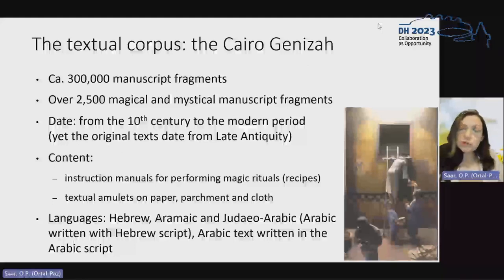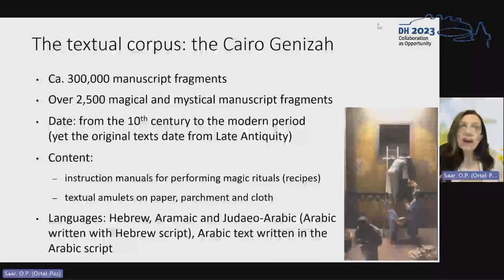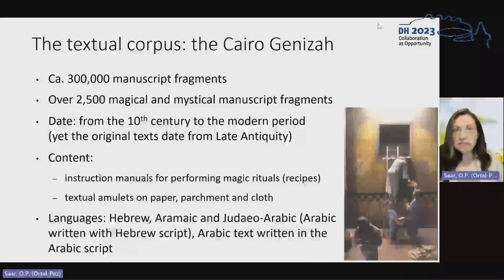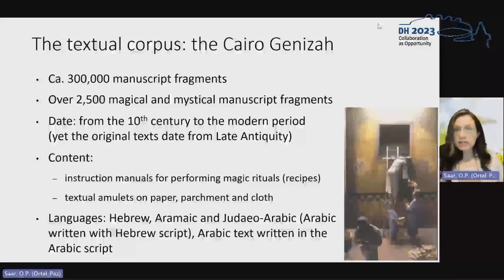Those fragments that interest us contain two types of works. First of all, instruction manuals for performing magic — recipes that instruct the magician on how to write an amulet, how to conduct a magic ritual, and so on. And secondly, these fragments also contain textual amulets on paper, parchment, and cloth. The languages in which they are written are a mixture of Hebrew, Aramaic, and Judeo-Arabic — Arabic written with the Hebrew script — and in some more rare cases, Arabic text written in the Arabic script.